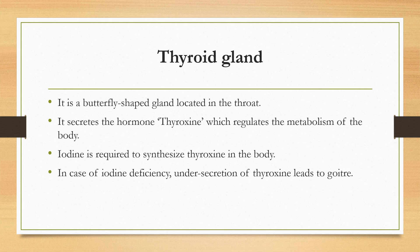The thyroid gland is a butterfly-shaped gland located in the throat. It secretes the hormone thyroxine, which regulates the metabolism of the body. Iodine is required to synthesize thyroxine in the body, so it is advised to eat iodized salt. In case of iodine deficiency, the under secretion of thyroxine leads to goiter.